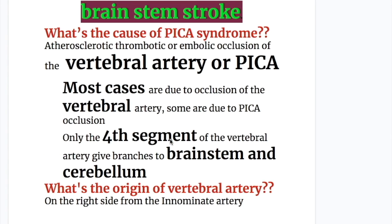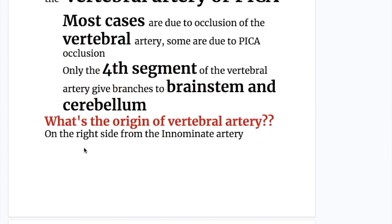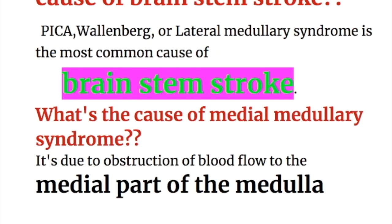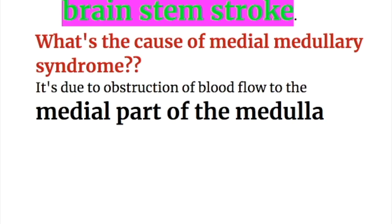What is the cause of PICA syndrome? It is the atherosclerotic, thrombotic, or embolic occlusion of the vertebral artery or posterior inferior cerebellar artery. Most cases are due to occlusion of the vertebral artery; some are due to PICA occlusion. Only the fourth segment of the vertebral artery gives branches to the brainstem and cerebellum. The cause of medial medullary syndrome is obstruction to blood flow to the medial part of the medulla.